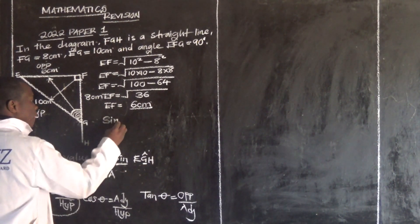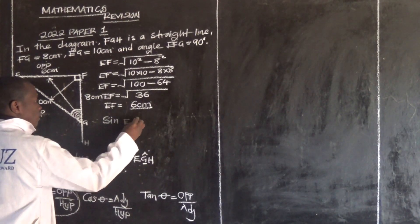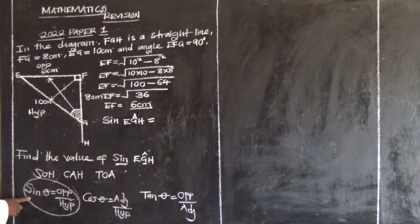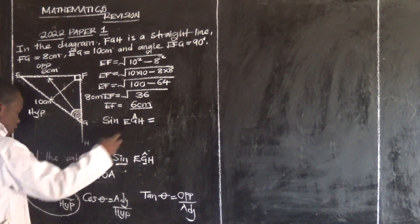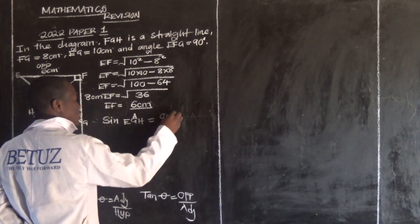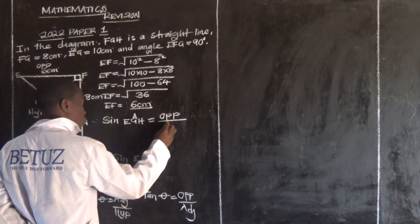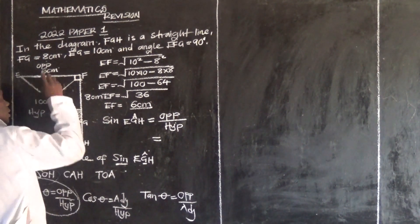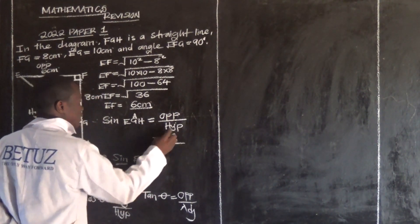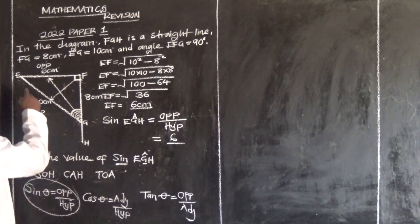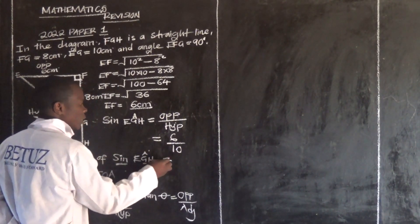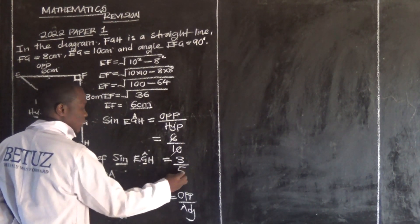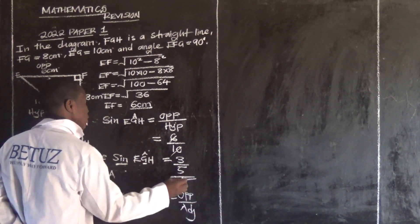So sine EGH equals opposite over hypotenuse. Our opposite is 6 and our hypotenuse is 10, so sine EGH equals 6 over 10. We can simplify by dividing both by 2, giving us 3 over 5. So the answer is 3/5.